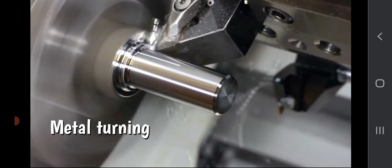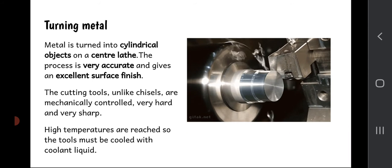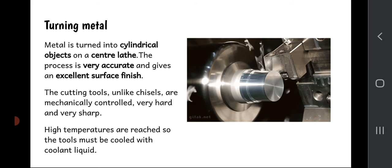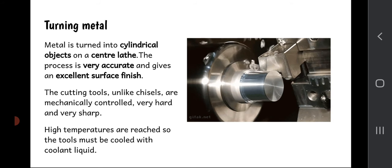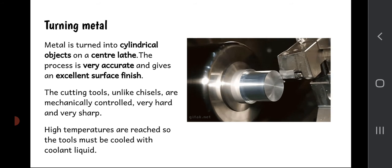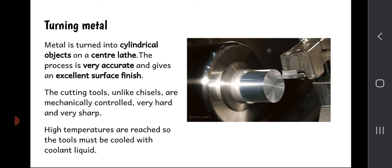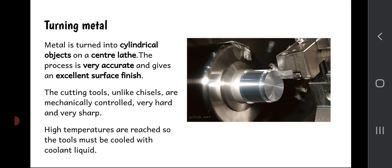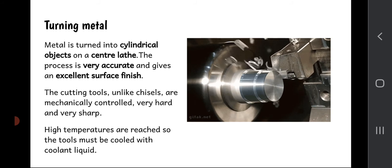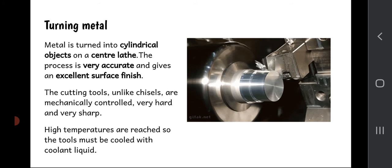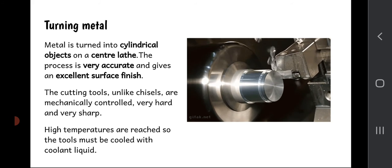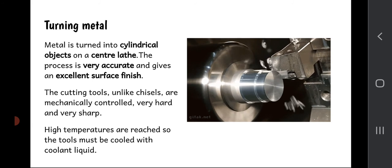Let's now turn our attention to metal turning, which is almost exactly the same as wood turning in that we've got a spinning piece of material and a cutting tool. But metal tends to be tougher, harder to cut, so we don't hold the cutting tools by hand. They're held inside a tool post to make things nice and accurate and safe. Metal turning is used to make cylindrical shapes out of metal on a machine called a centre lathe. The process is incredibly accurate and gives an excellent surface finish. The cutting tools, unlike chisels, are mechanically controlled, very hard, and very sharp. Since metal rubbing against metal generates high temperatures, these tools are cooled with a coolant liquid which sprays and squirts all over it.